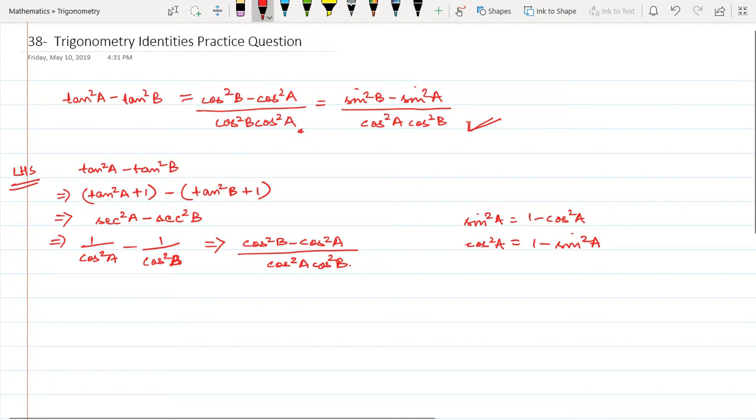What I get here is cos²B will become 1 - sin²B, and cos²A will become 1 - sin²A. This whole thing is divided by cos²A times cos²B. Now this becomes equal to 1 - sin²B - 1 + sin²A divided by cos²A times cos²B.